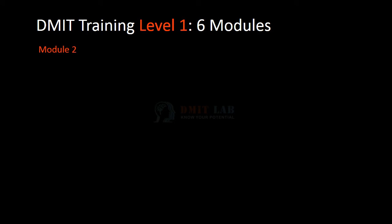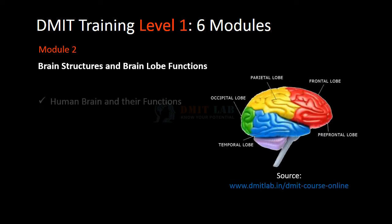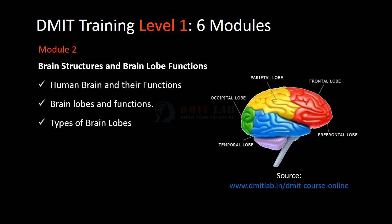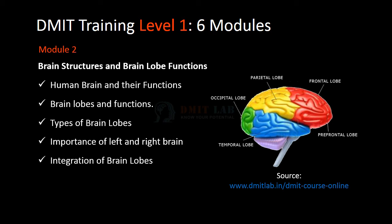In module 2 you will learn brain structures and brain lobe functions. In that you will learn the human brain and their functions, brain lobes and functions, types of brain lobes, importance of left and right brain, integrations of brain lobes, and understanding the fingerprint patterns and brains.